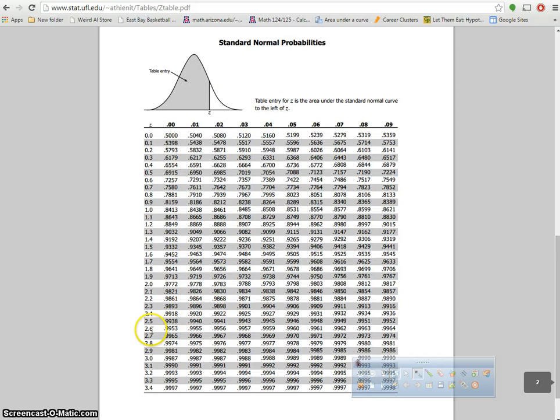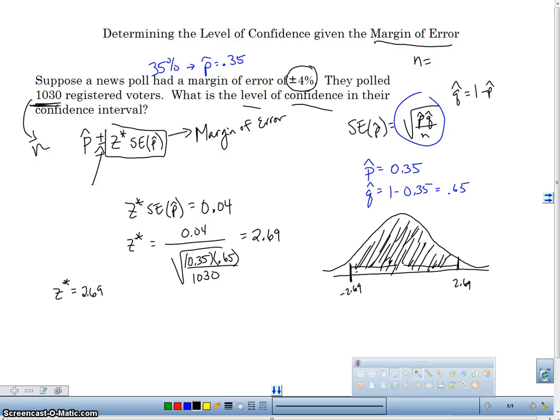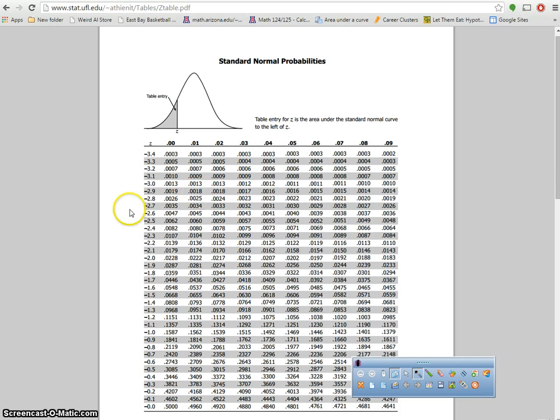And let's go positive 2.69. So 2.69 is 0.9964. So I've got 0.9964, 0.9964.